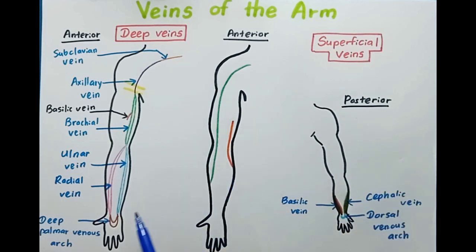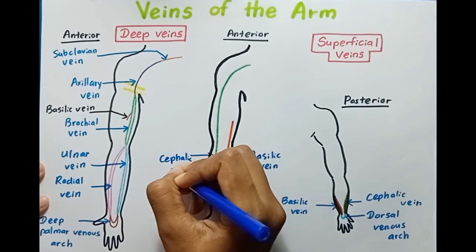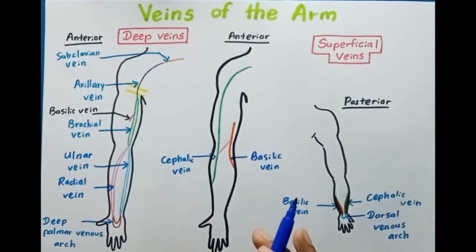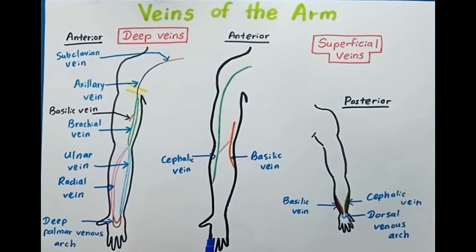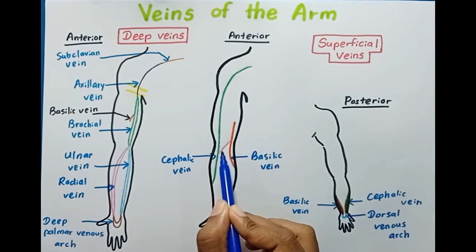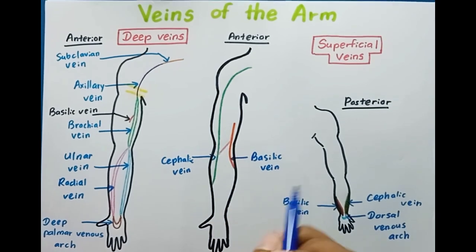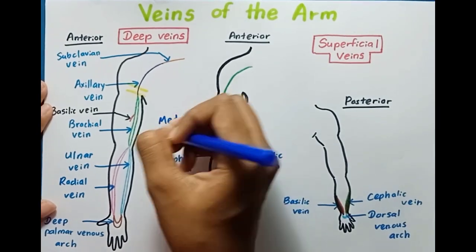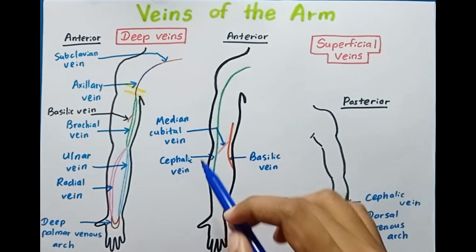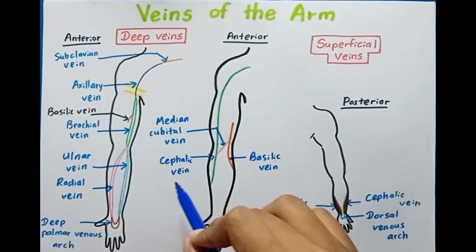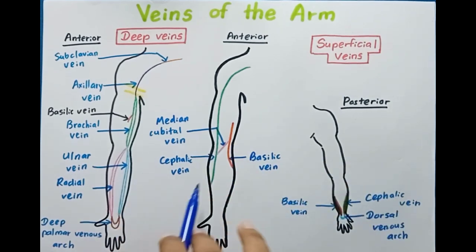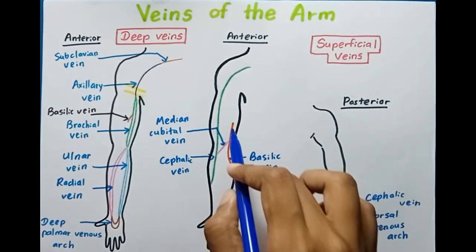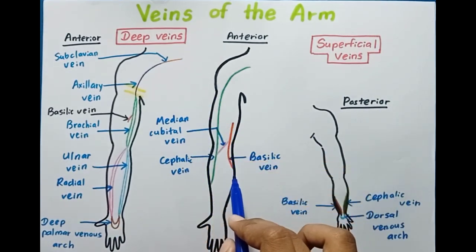These are the two main superficial veins of the arm: the basilic vein and the cephalic vein. Another important vein is the median cubital vein, which connects the cephalic vein on the lateral side with the basilic vein on the medial side.